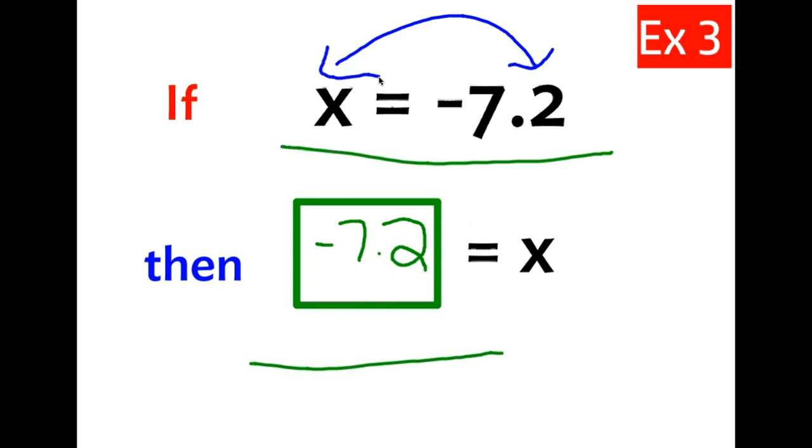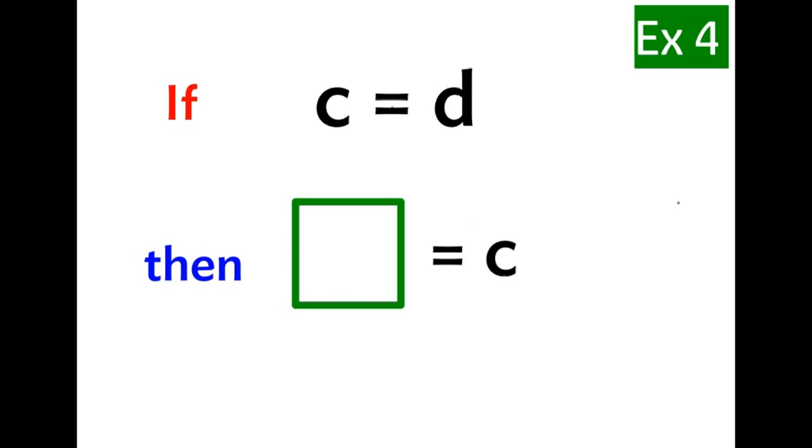You can think of it as just kind of switching these two things, right? And that's why we call it symmetric property, because if the thing on the left is equal to the thing on the right, then the thing on the right must be equal to the thing on the left from the previous statement. So it's just switching the two. That's all you're doing.